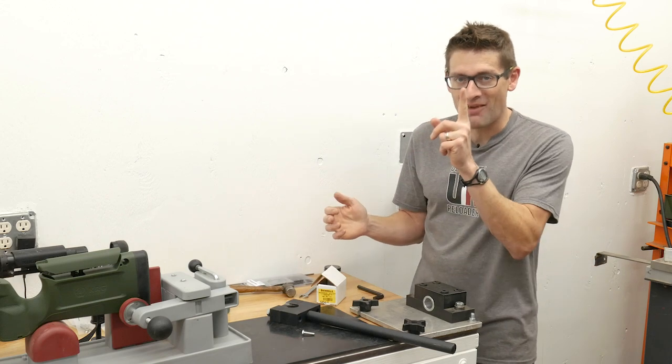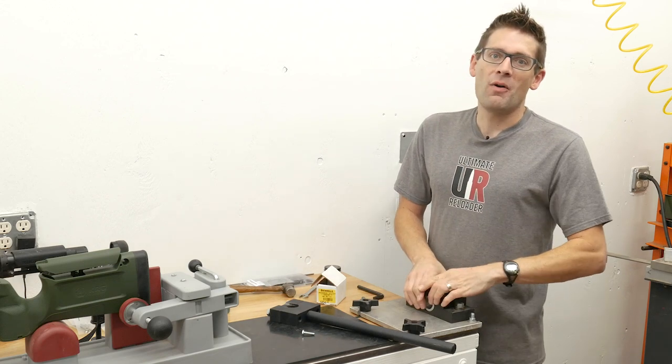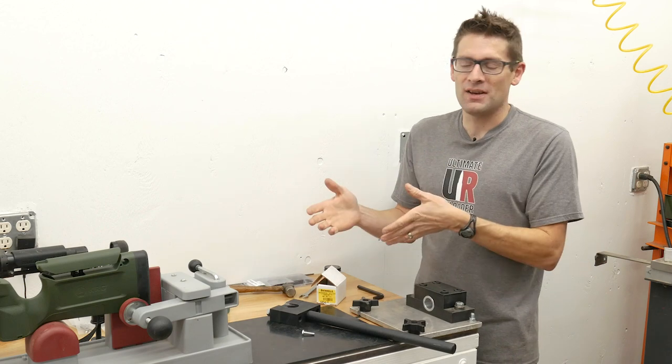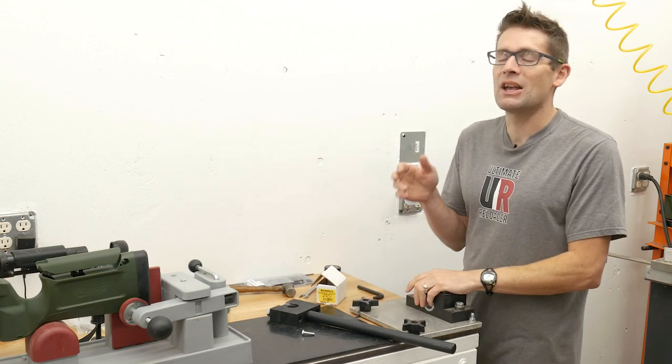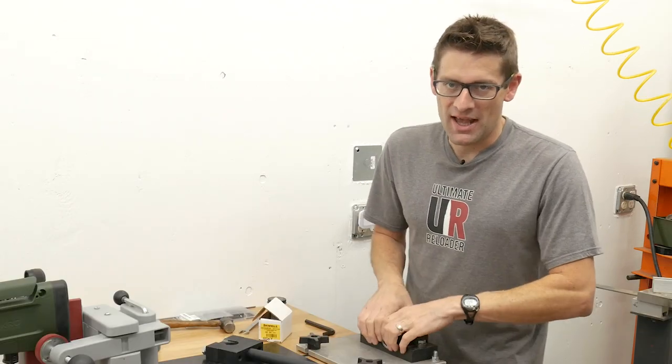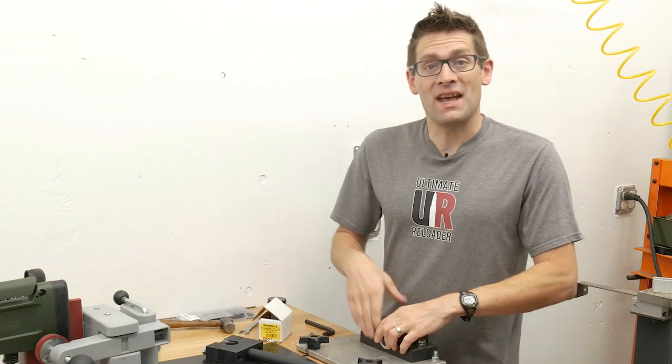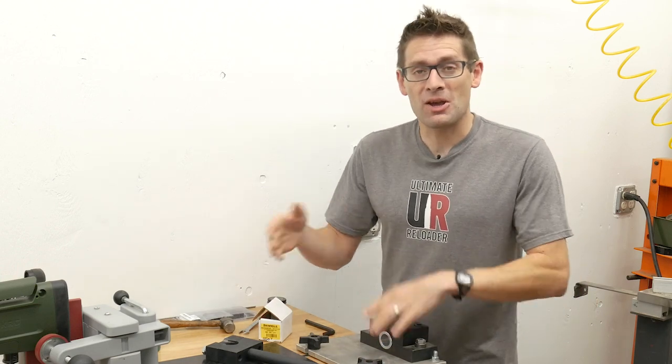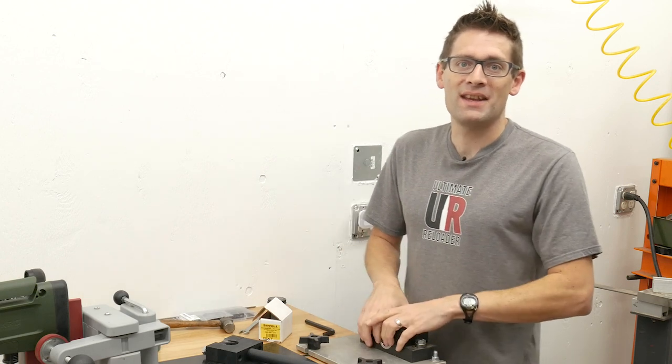There's one more thing I'm going to cover before we mount the barreled action in the KRG Bravo stock, and that's making a custom thread protector. We can actually use that cutoff section of barrel from the muzzle end. Really cool. I'll show that in the next video.